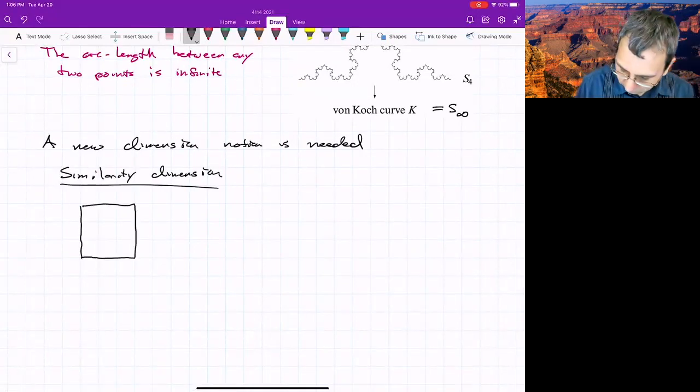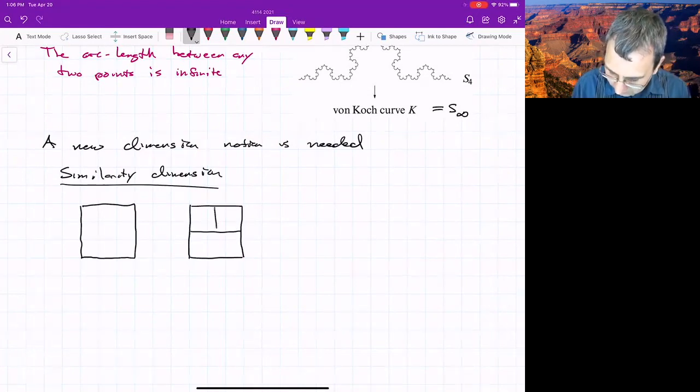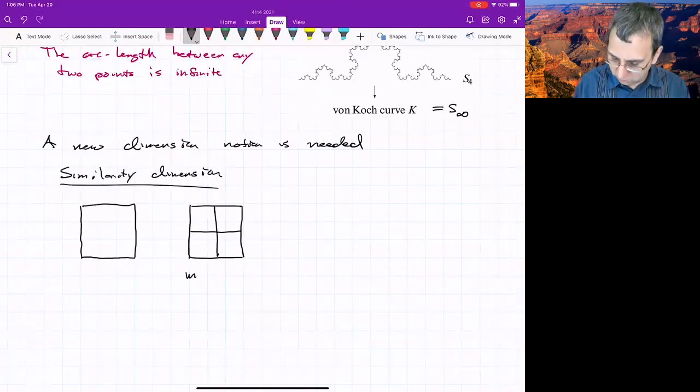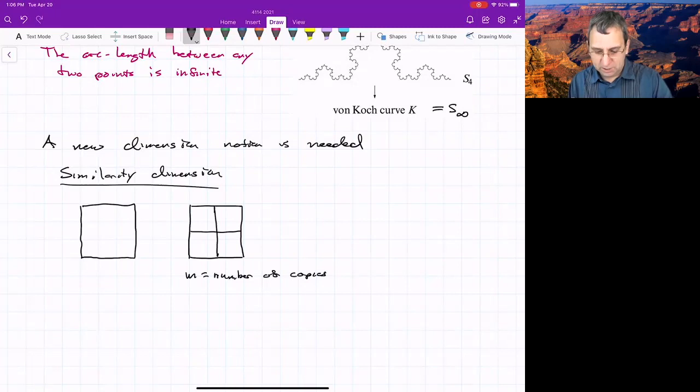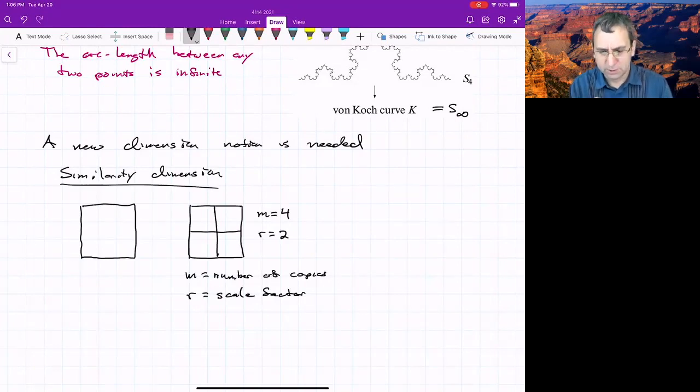And if we were to break the square up into four copies, if we have M equals the number of copies, in this case, we break it into four copies. Well, each of those boxes was scaled by a factor of two. So in this case, M equals four, R equals two. And you could think of it as one way or the other. You either impose the scale factor or the number of copies. There's going to be a relationship between them.